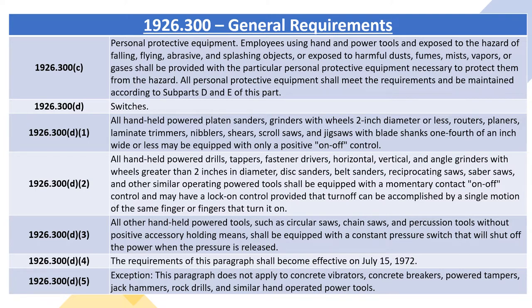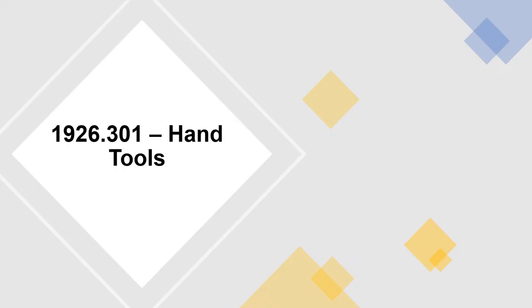1926.300(d)(3): All other handheld powered tools such as circular saws, chainsaws, and percussion tools without positive accessory holding means shall be equipped with a constant pressure switch that will shut off the power when the pressure is released. 1926.300(d)(4): The requirements of this paragraph became effective on July 15, 1972. 1926.300(d)(5) Exception: This paragraph does not apply to concrete vibrators, concrete breakers, powered tampers, jackhammers, rock drills, and similar hand-operated power tools.